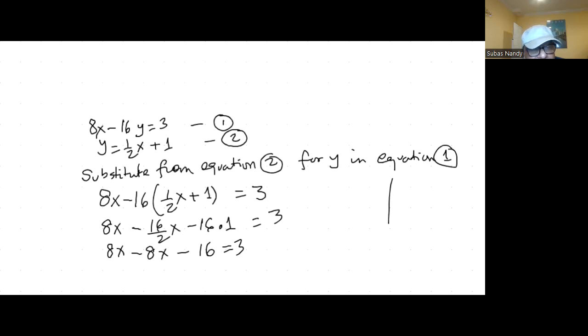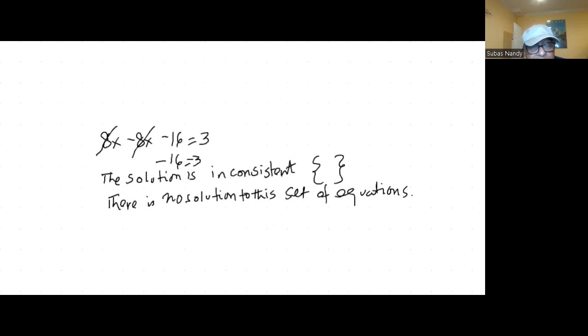So minus 16 multiplied by half x and minus 16 times 1 equals 3. Basically I have 8x minus 16 divided by 2 is 8. 8x minus 8x minus 16 equal to 3. This will lead me to minus 16 equal to 3. So basically there is no solution to this set of equations. The solution is inconsistent because minus 16 cannot be equal to 3.